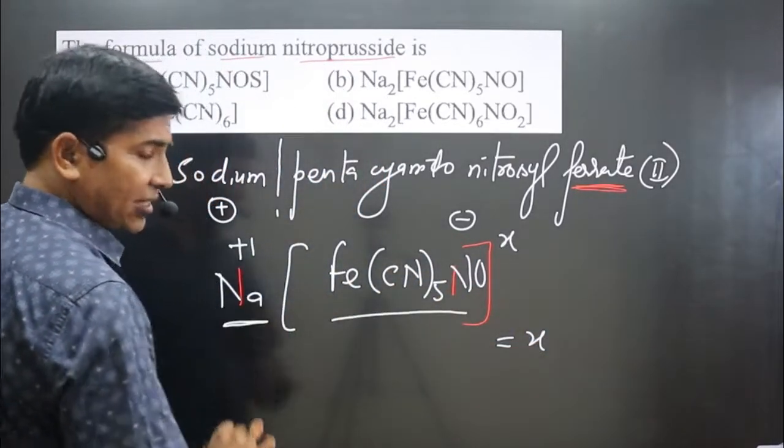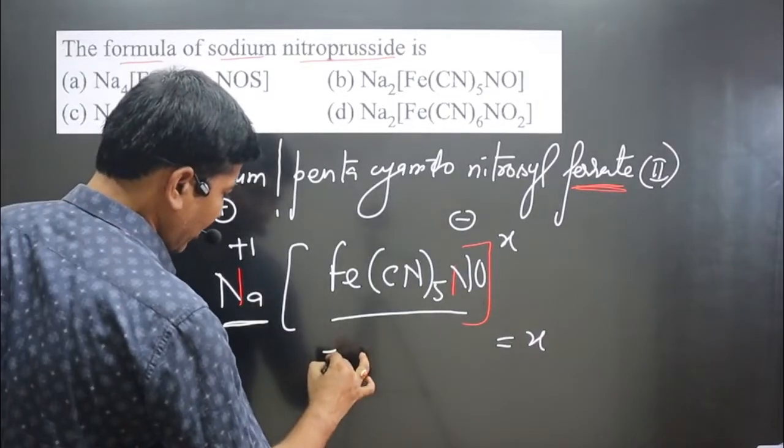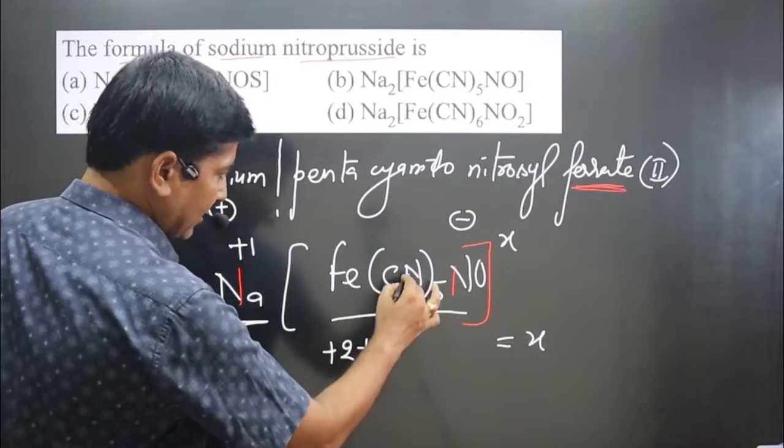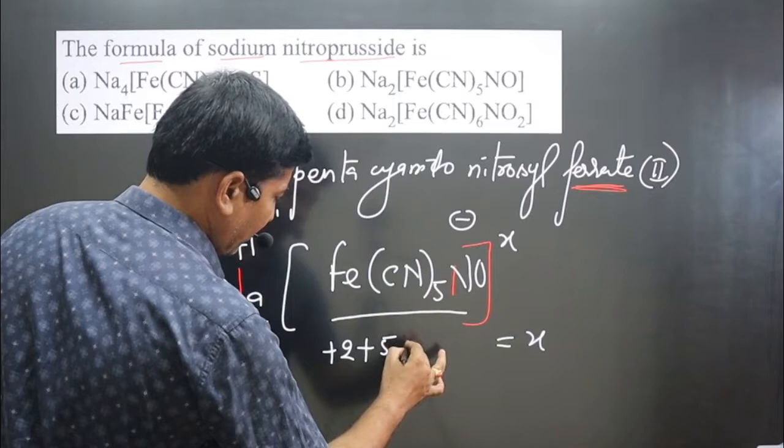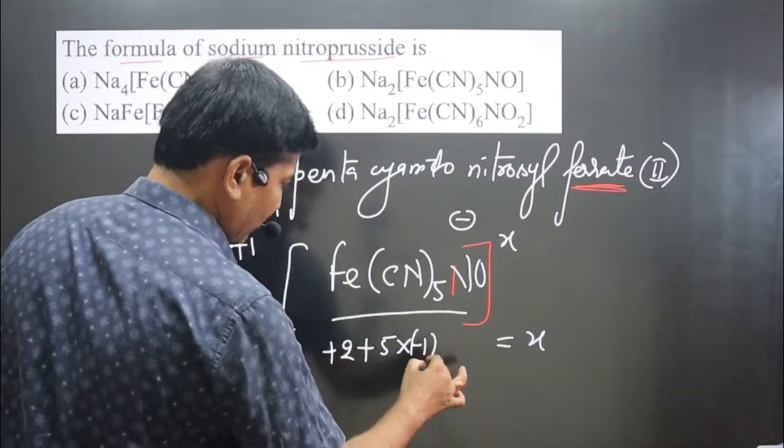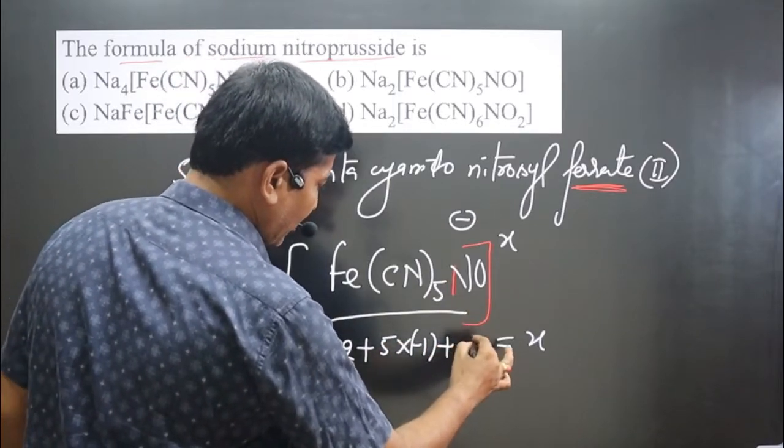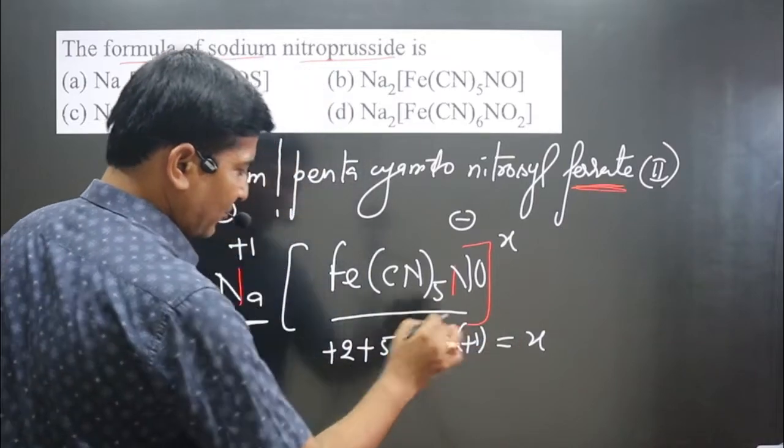We are calculating X value for this anionic complex. Iron is what, plus 2 and plus, this is cyanide ion, 5 multiplied by minus 1, minus 1 and plus, cation is what, plus 1 is there. Now we can simplify. X value we can calculate.